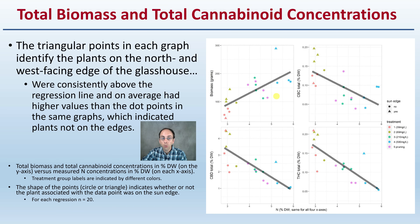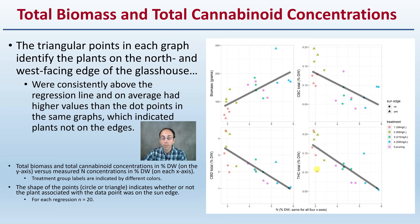Looking at the general trend, we can see that biomass in grams is increasing, which everyone might think means better, bigger plants. However, as biomass increases, we see all these other regression lines going the opposite direction — those are looking at total CBC, total CBD, and total THC. There is a negative correlation there. They also did a little study on pruning, but I'll focus more on the nitrogen treatment.